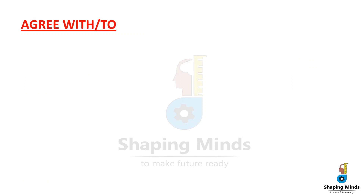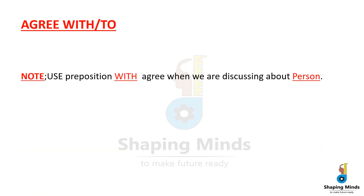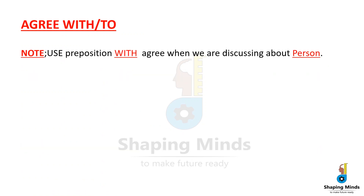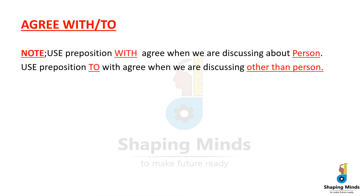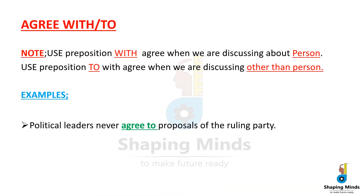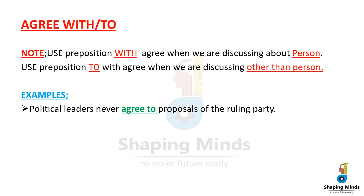The second word is 'agree.' Agree is used with prepositions 'with' and 'to.' When do we use 'with' and when 'to'? We use 'with' when we discuss a person, otherwise we use 'to.' For example: 'Political leader never agrees to the proposals of the ruling party.' Here, the political leaders are not agreeing with the proposals of the ruling party, so we use preposition 'to' with agree.